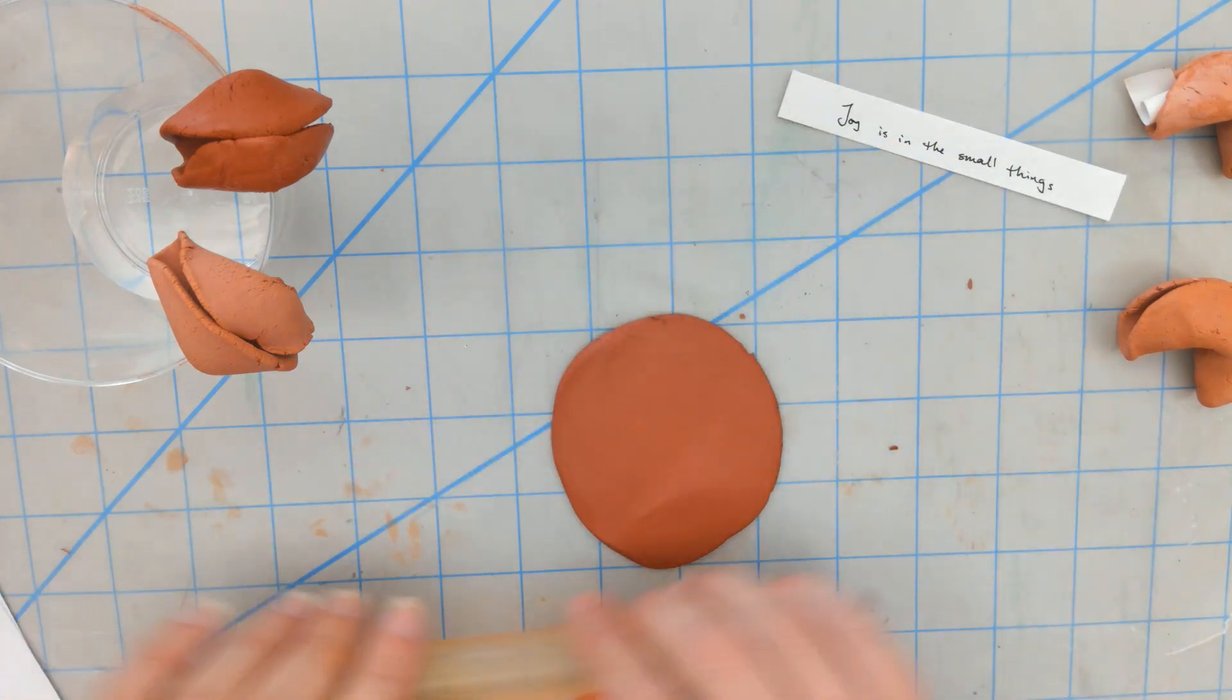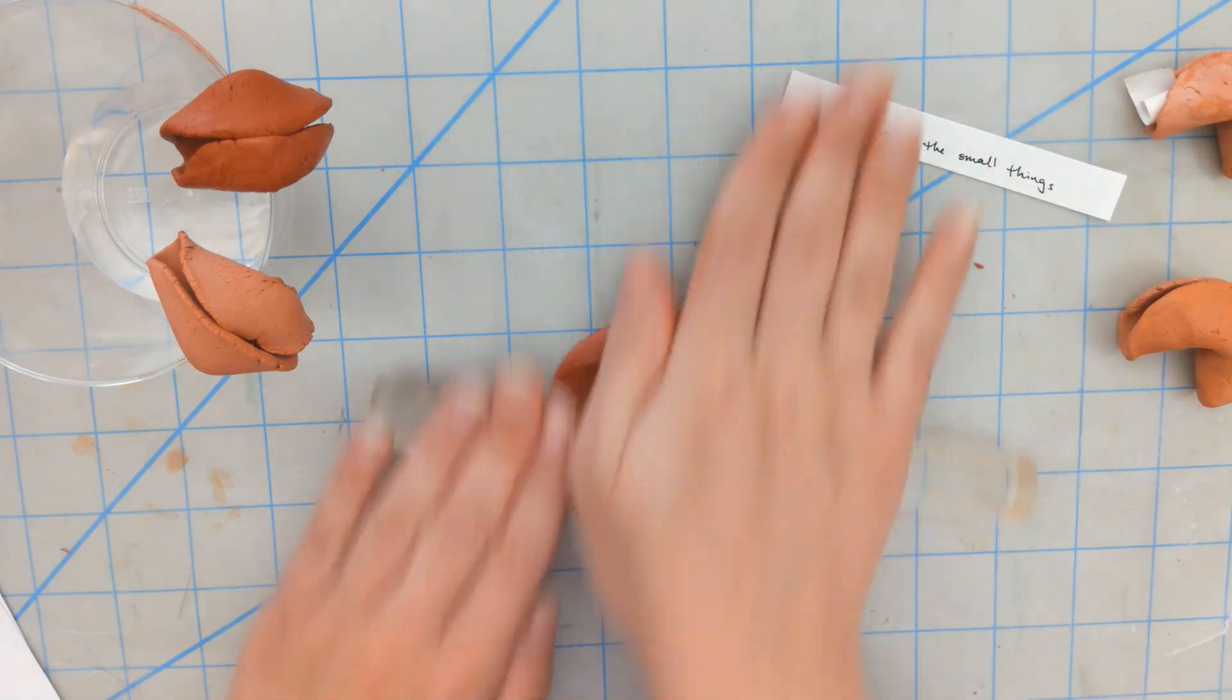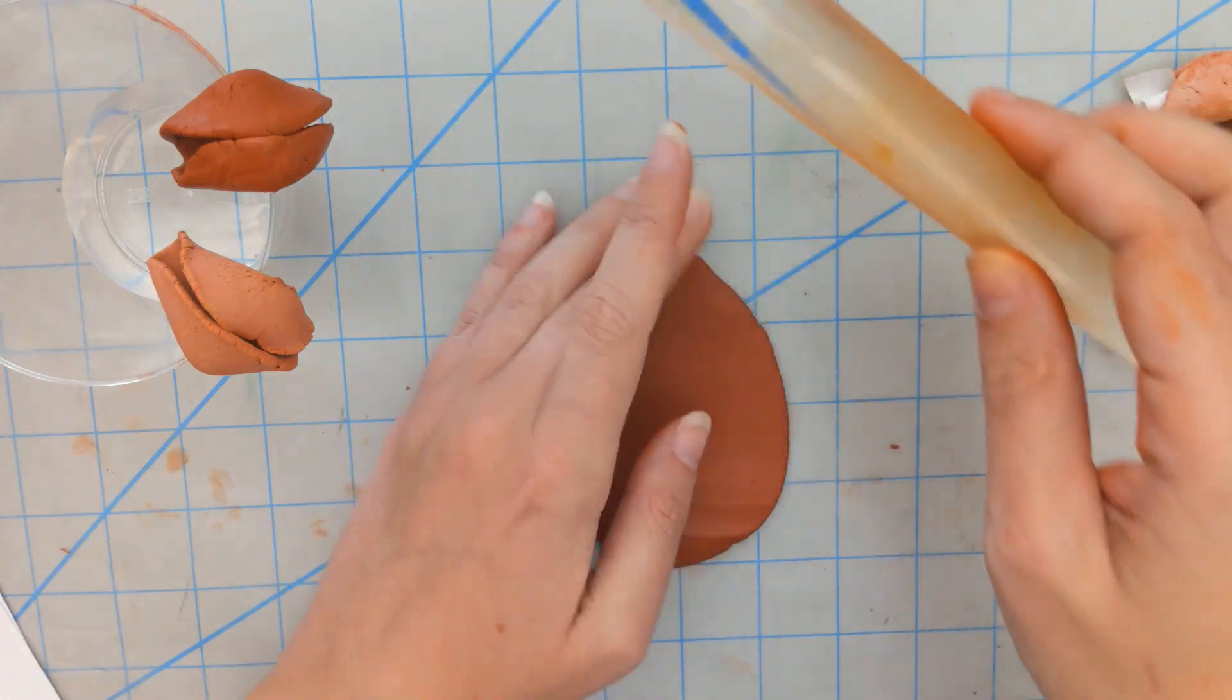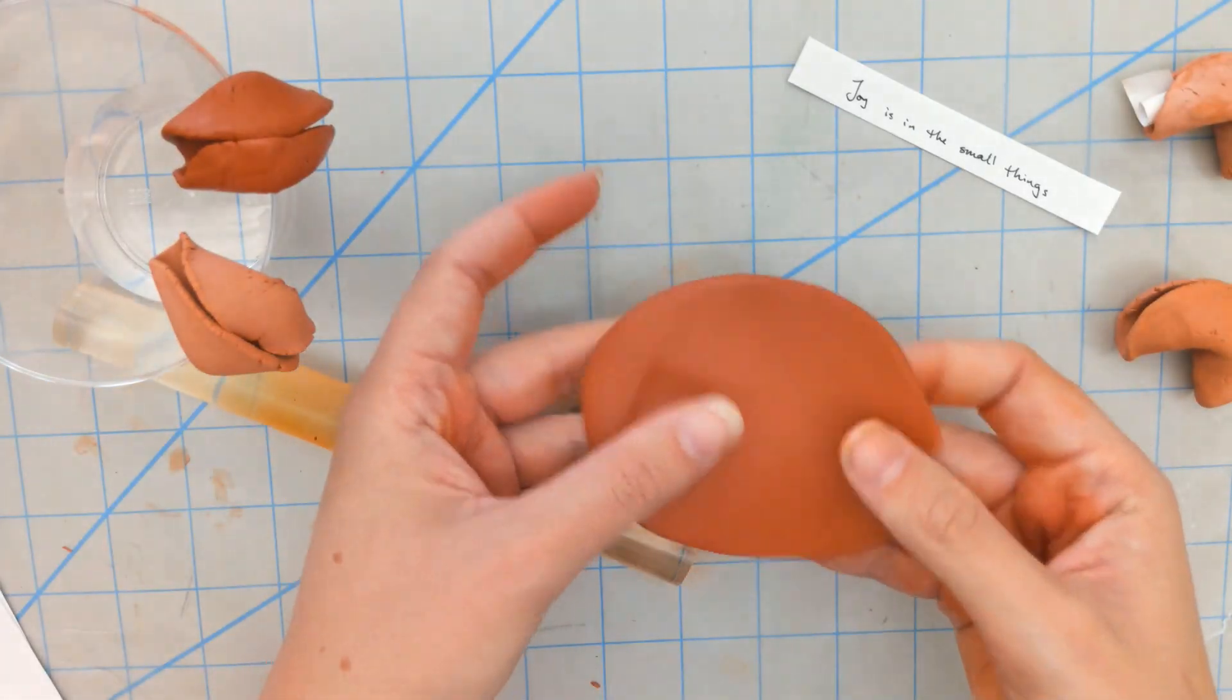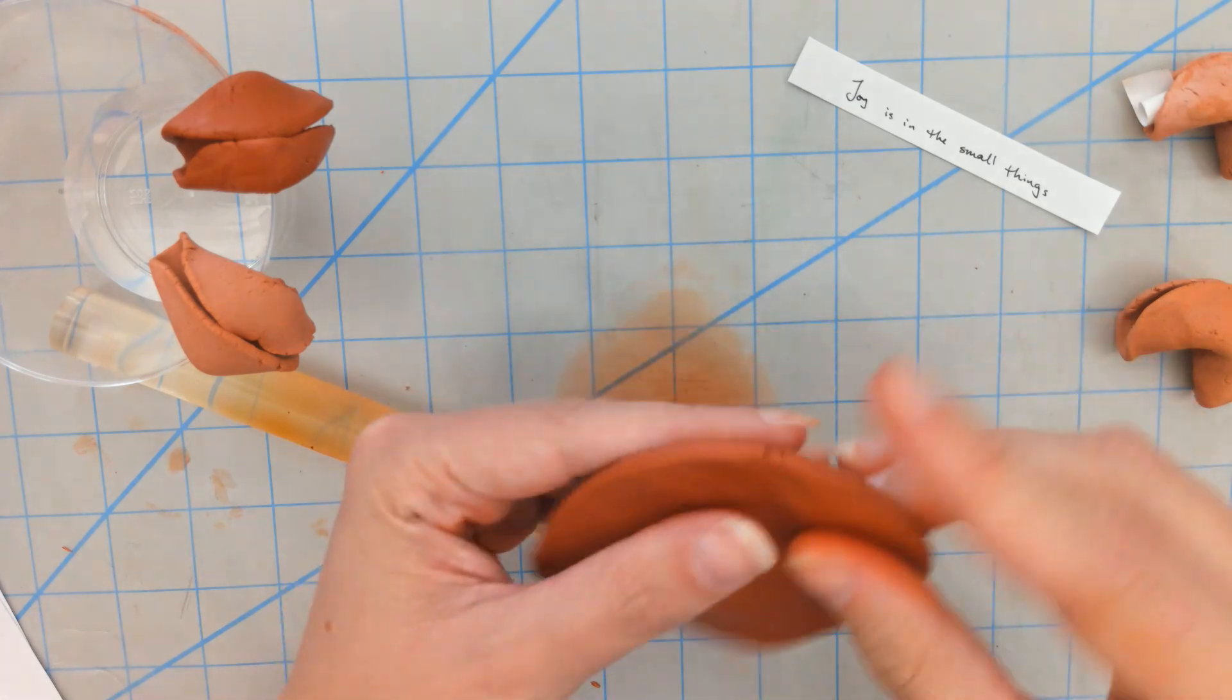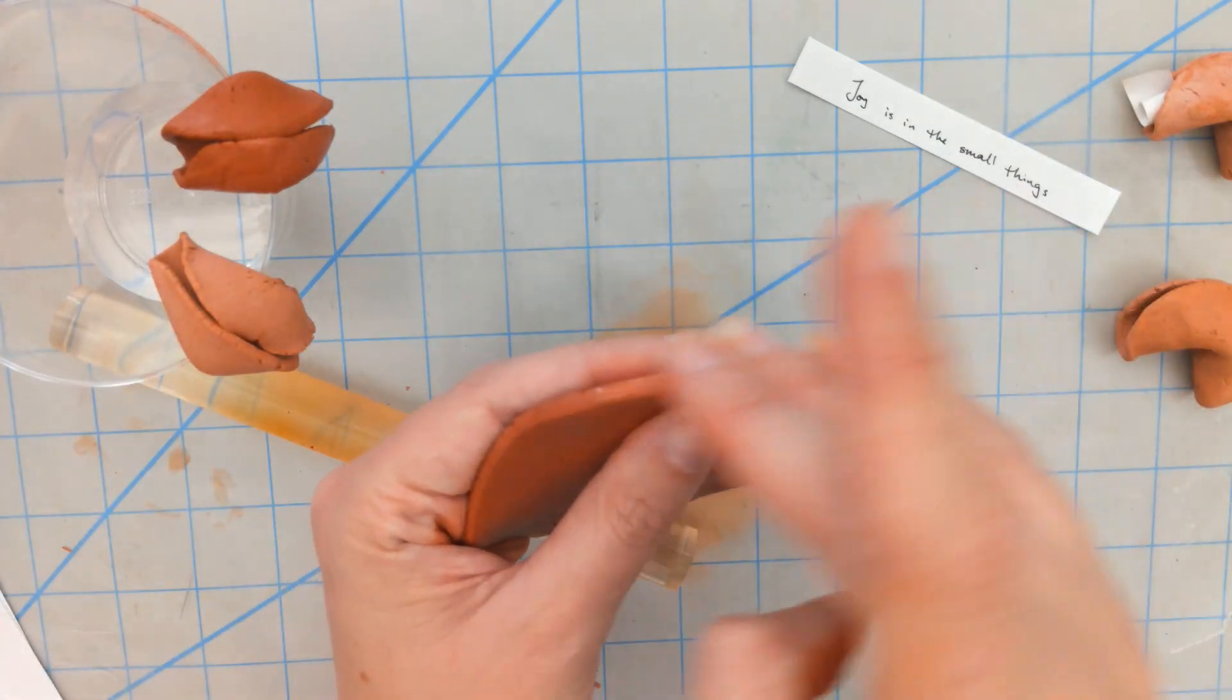So again, we're just making our flat circle, a flat disk of the clay. You want it to be as circular as possible. If there's a little bit of oblong to it, that's okay, but you really want it to be as much of a circle as possible. And again, if it gets too oblong, just fold in that edge and form it back into a circle.